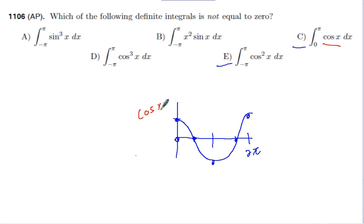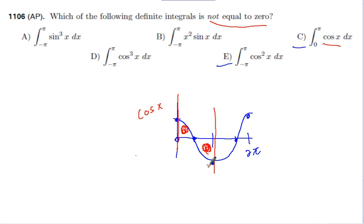So if we're integrating from here to here, the question is: is it 0 or is it not 0? Does this area equal this area? It does end up being symmetric — or not necessarily symmetrical, but they're equal. Since one of them is above the x-axis and one of them is below the x-axis, the negative one cancels out the positive one. So this does end up equaling 0. So the correct answer is not C.